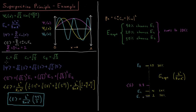Our wave function has c₁ = √(1/2), c₂ = √(1/5), and c₅ = √(3/10). Notice if you square each of these and sum them, they equal 1, so this is a normalized wave function. The superposition is: √(1/2) ψ₁ + √(1/5) ψ₂ + √(3/10) ψ₅.